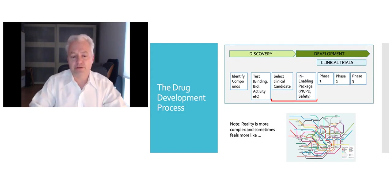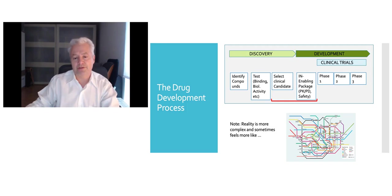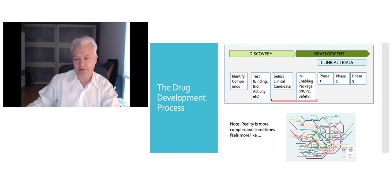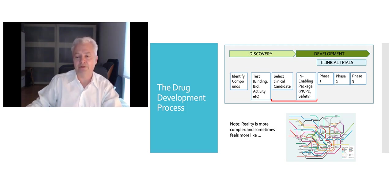Looking at the drug development process for antibodies — simplified here — you have the discovery and the development phase. In the development phase, you focus on clinical trials. You start by identifying compounds that are interesting, test them for binding to the target molecule, and then comes the most important point: you select your clinical candidate and perform your IND enabling package, which will allow you to enter the clinical phase. Today we want to focus on these two packages because they are very crucial. If you make any mistakes here, you will not be able to enter the clinical phase.